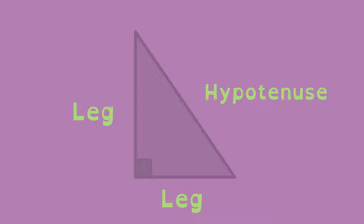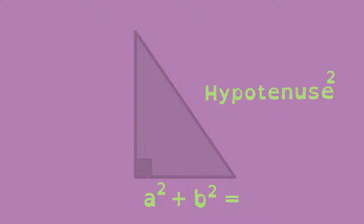The Pythagorean Theorem states that the measure of two legs of a right triangle, squared and added together, equals the square of the hypotenuse.